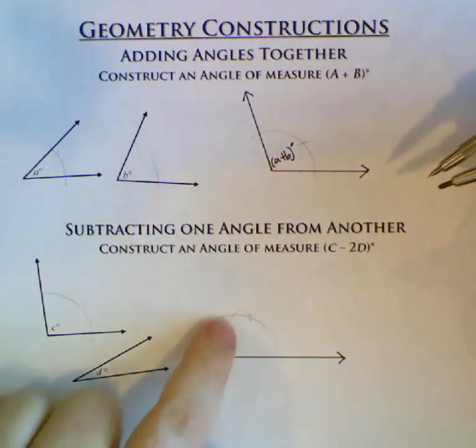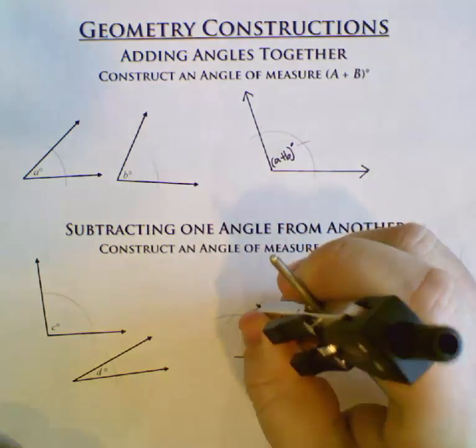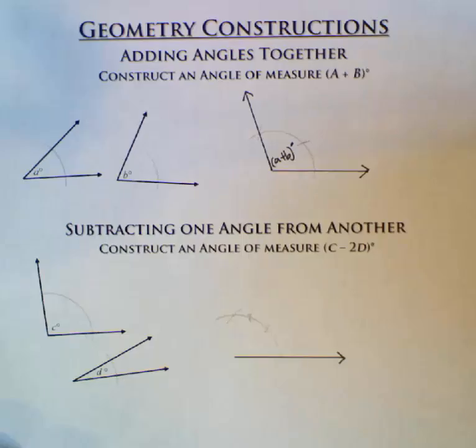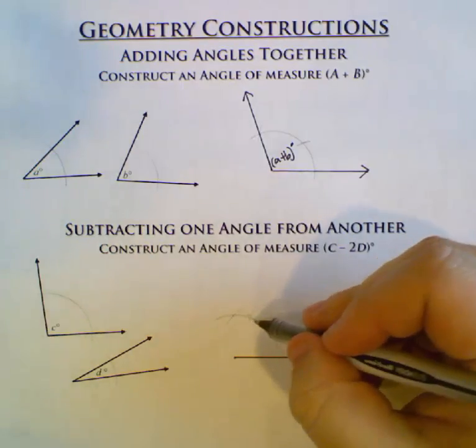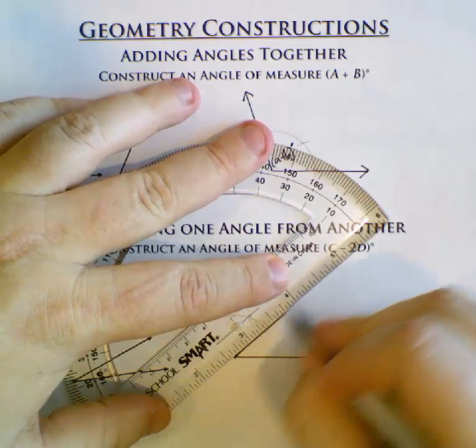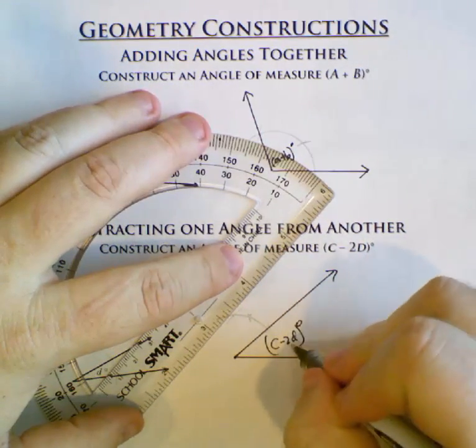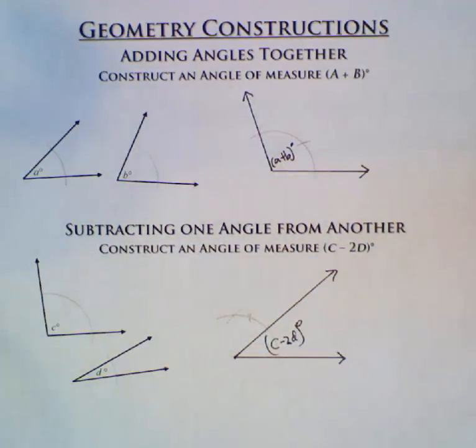I'm going backwards. So I'm subtracting this way, and I'm going to subtract two of them. So this whole thing was C, and I subtract D, and I subtract another D. So this part is C minus 2D. And there we go.